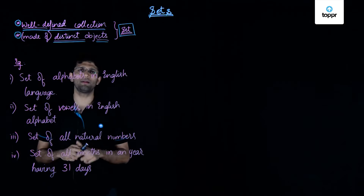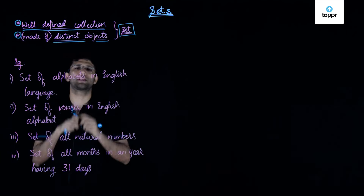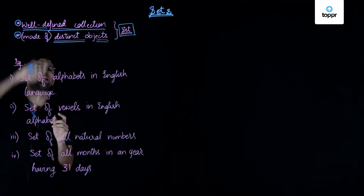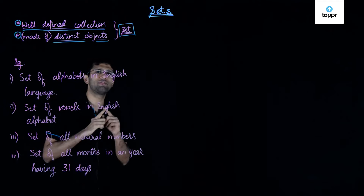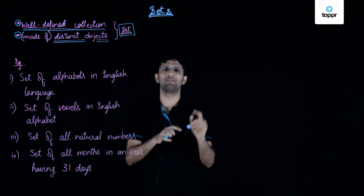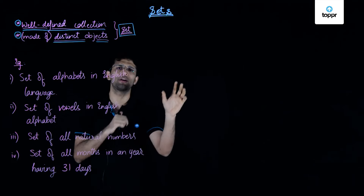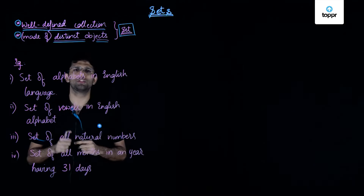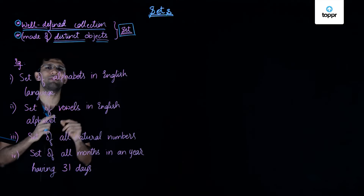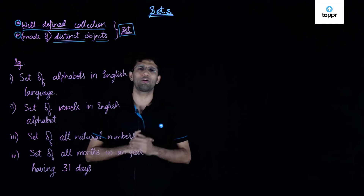So what is a set? Well, firstly it is a collection and it is a collection of distinct objects. Moreover, a set is defined as a well-defined collection. By well-defined collection, we mean that if we are given a certain element, we can clearly say whether that element is part of a given set or it is not a part of the given set. This term well-defined means we can clearly define whether a given element is part of a set or not.